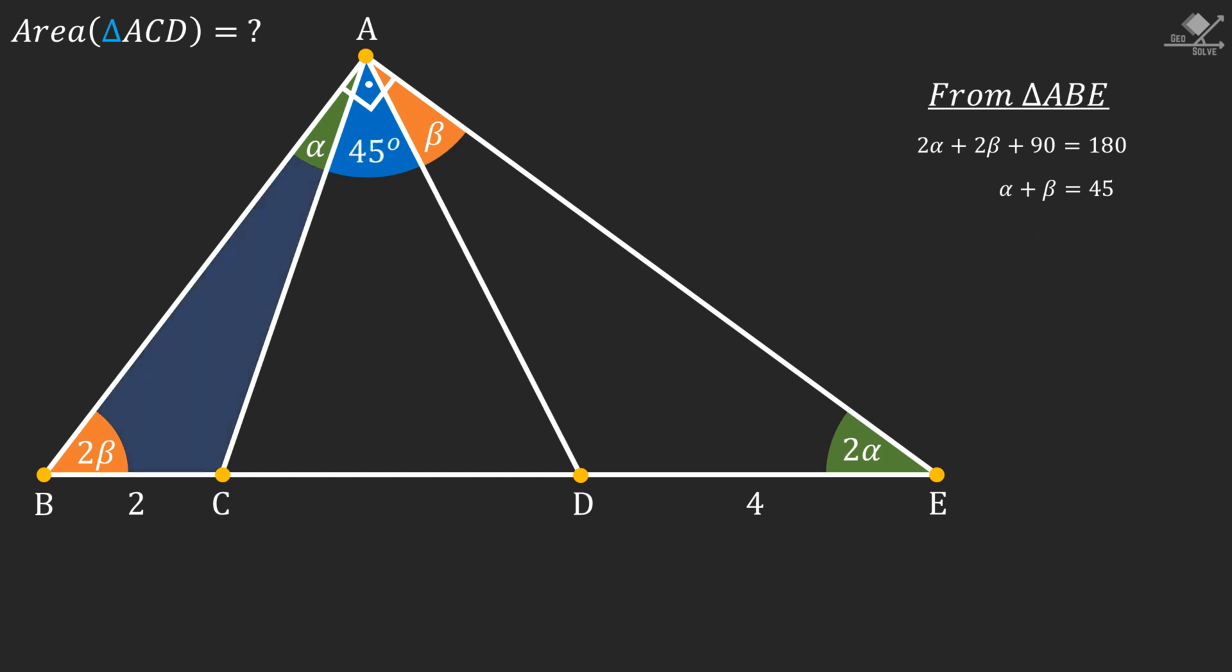Now let's focus on this triangle and use exterior angle theorem to find this angle to be α + 2β degrees. Now focus on this triangle. And again using exterior angle theorem we can find this angle to be β + 2α degrees.